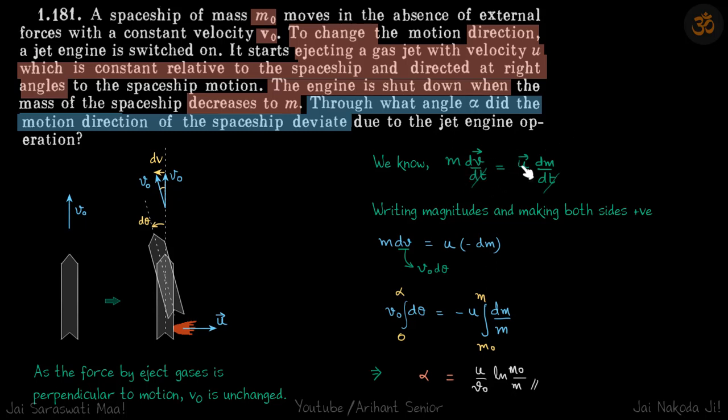Actually the equation was m dv/dt is equal to minus μ times u vector, and minus μ we can write as dm/dt. This is our equation which we have proven in the last few problems. In particular problem number 178, so you can refer that if you have doubt on how we got this equation.